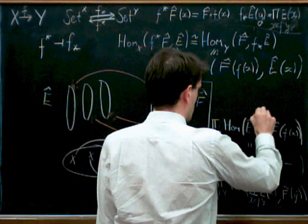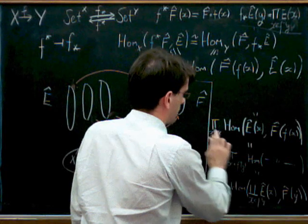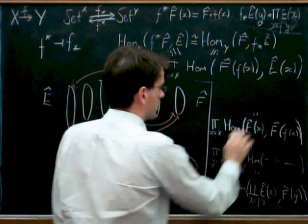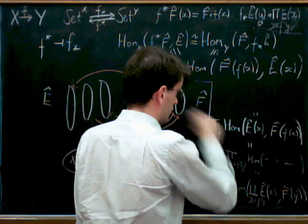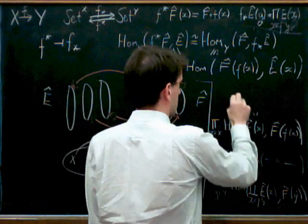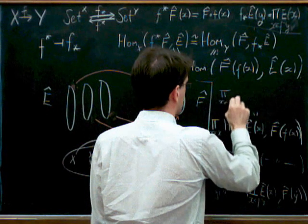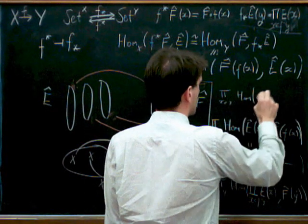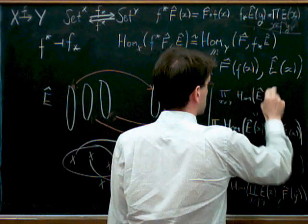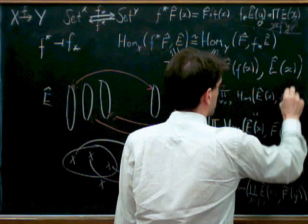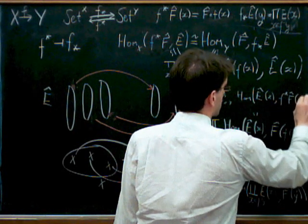But going the other way, we could just push that product inside, and this would just be—sorry, just leave that as it is—and that would just be the product over X in X of the Homs from E hat of X into F star of F hat of X.